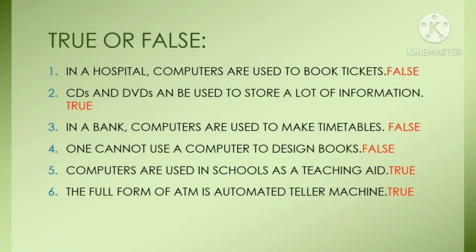Next question is true or false. First: in a hospital, computers are used to book tickets. It is a false statement. We know that in a bank, computers are used to book tickets, not in a hospital. Second: one cannot use a computer to design books — that is also false, because we can use a computer to design books.